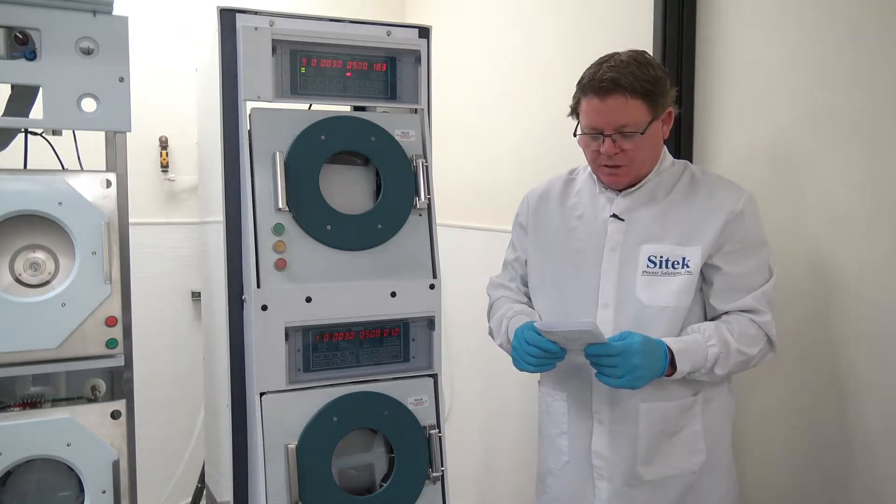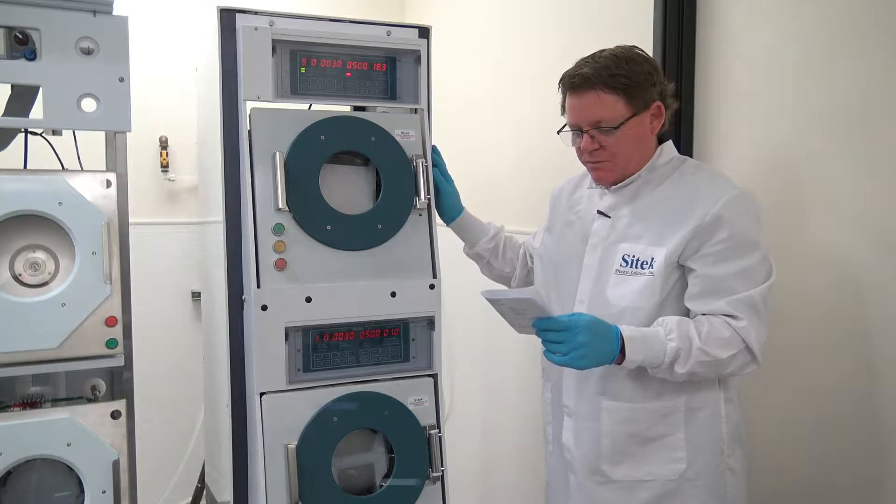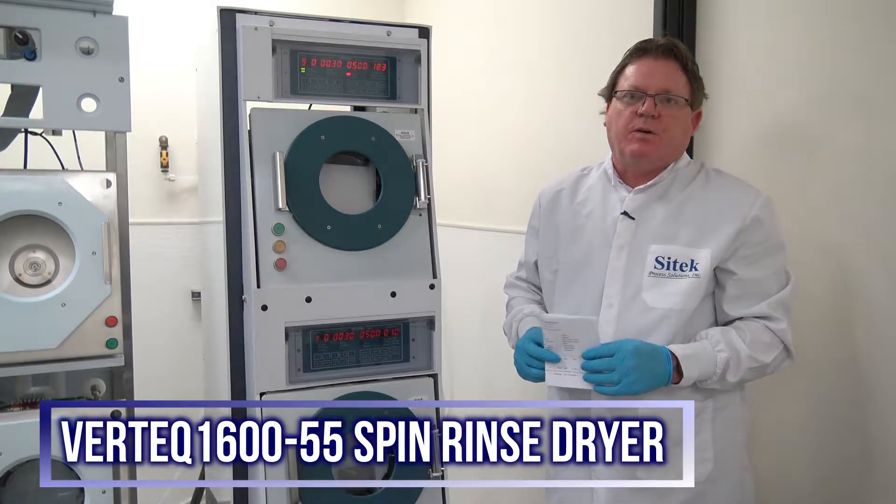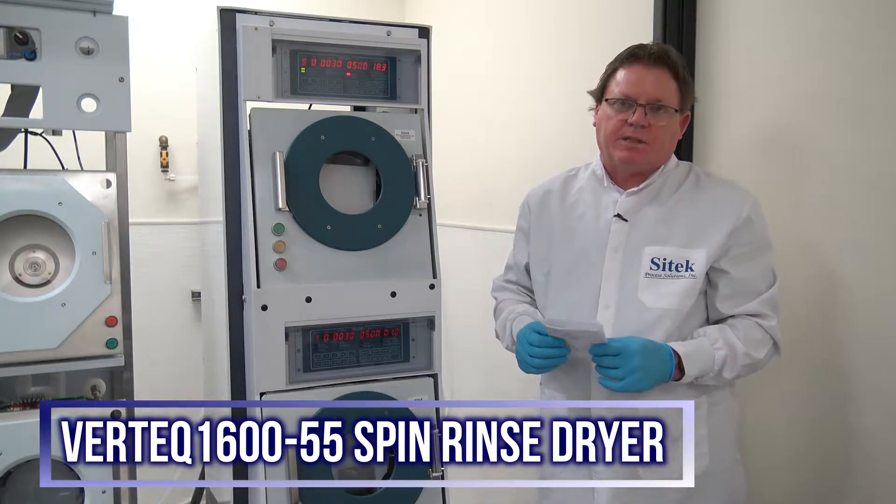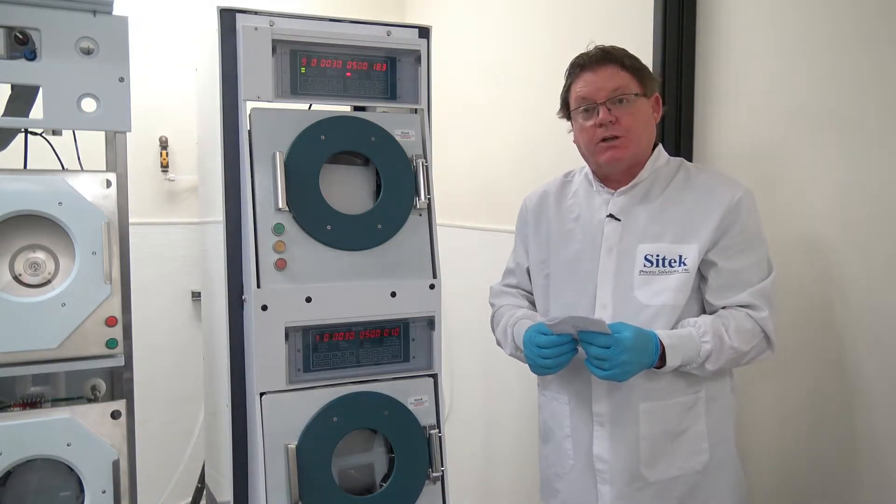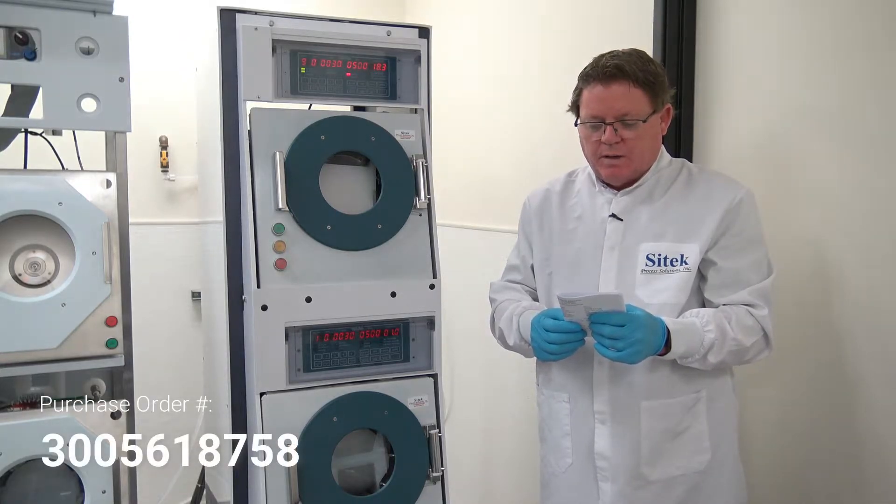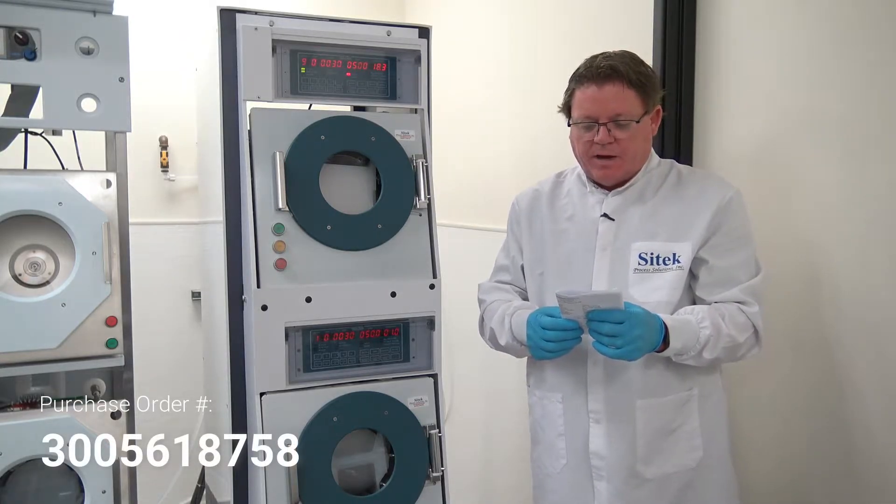Today I'm doing a video source inspection on a refurbished Vertex 1600-55 spin rinse dryer. This acceptance video will be uploaded to our YouTube channel, so we do not give our customers names out. However, so they know it's their tool, we do give out their PO number, 300-561-8758.